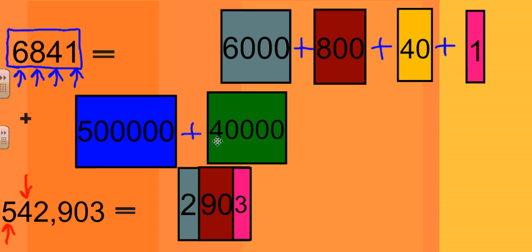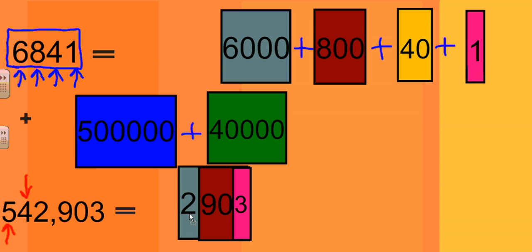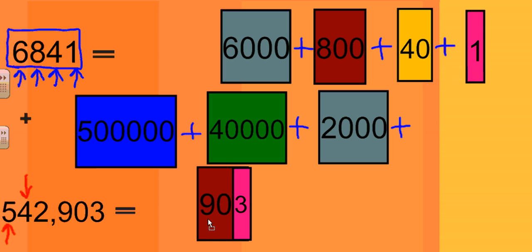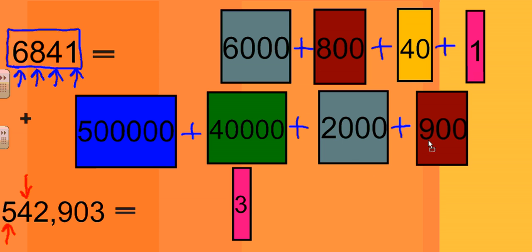Moving to the next digit to the right, we come to the 2, which is in the thousands place. 2 times 1000 gives us the product of 2000. Again putting the plus signs in between as we work from left to right, we come to the 9, which is in the hundreds place. 9 times 100 is equal to 900.